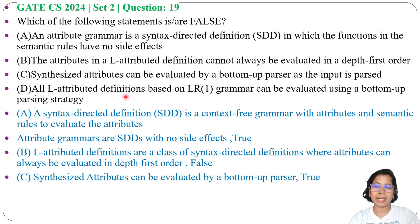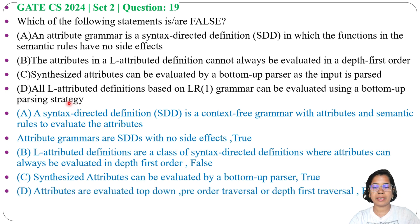Next, Option D: All L-attributed definitions based on LR(1) grammar can be evaluated using bottom-up parsing strategy. This is false. L-attributed are evaluated by top-down, or you can say pre-order traversal or depth-first traversal. It's not bottom-up. Here it's written bottom-up, so due to this it is false.